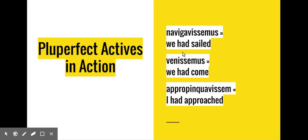Our translation has not changed between indicative and subjunctive. The form has changed slightly. Here you have the perfect infinitive, navigavisse, and then you have the personal ending, mus. Third principal part, veni, SSE, and then the personal ending, mus. And then you have this very long version of a pluperfect subjunctive that features the perfect infinitive, appropinquavisse, and then the personal ending is M.